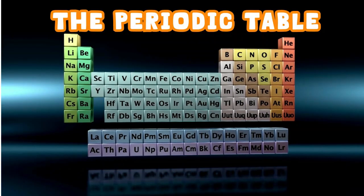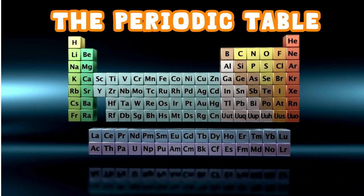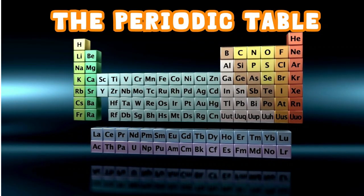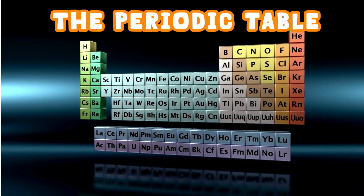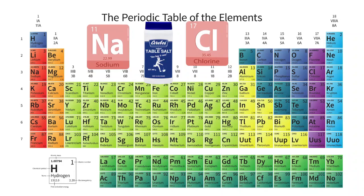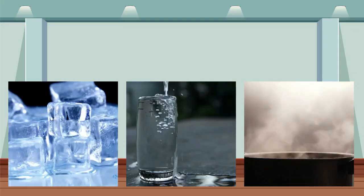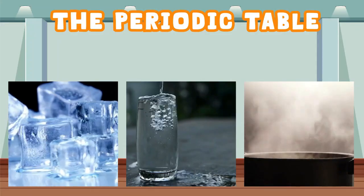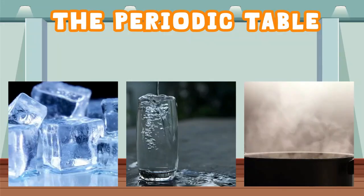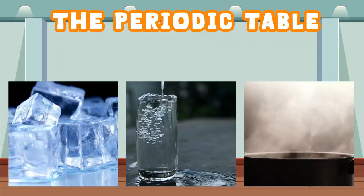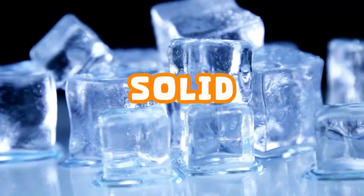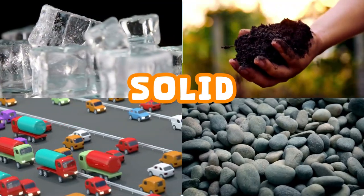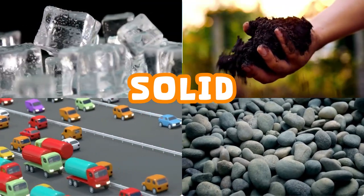The periodic table is a list of all the possible ingredients in the world — everything in the entire universe is made out of them. Every single solid, liquid, or gas in the world is made up of different combinations of elements from the periodic table. Today we are talking about solids.